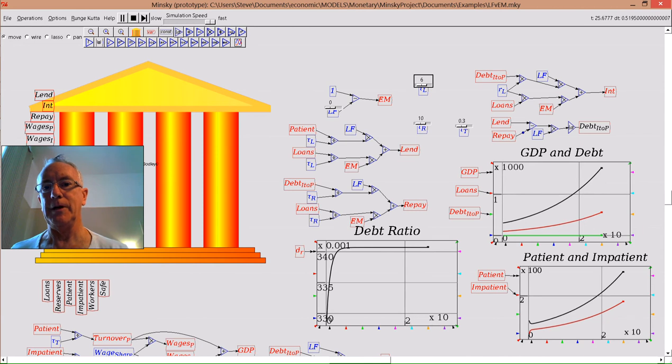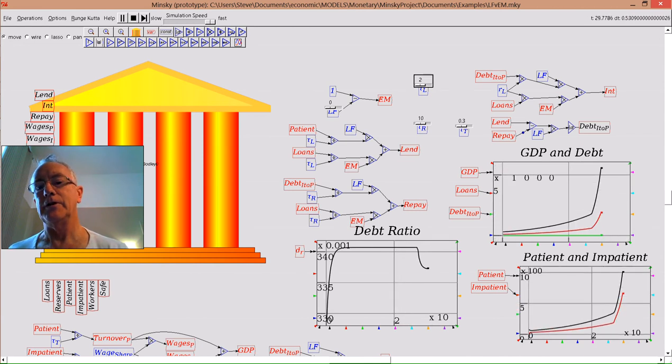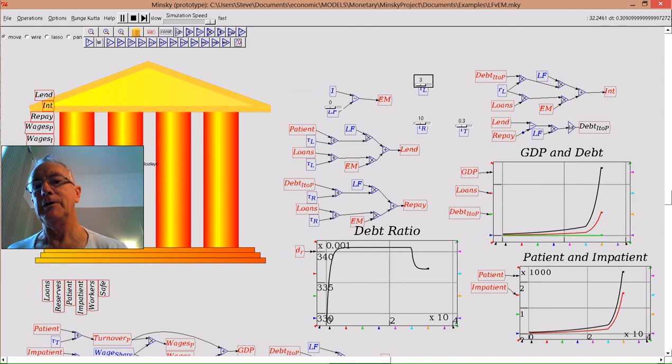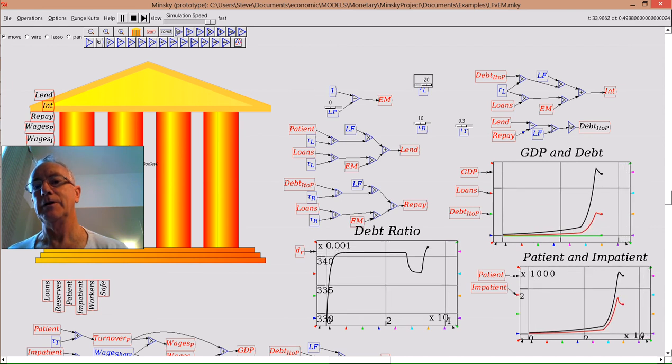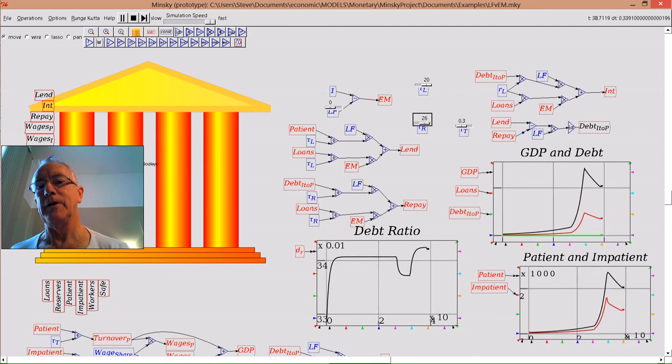Now if I change the rate of lending, let's have a rapid increase in the rate of lending, and off goes GDP—it accelerates. Or a rapid decrease in the rate of lending brings GDP down. Change how fast repayment goes, much faster